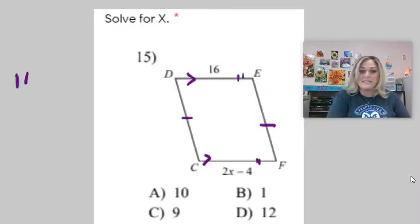So that means 16 should equal the other side across from it, 2x minus 4. So if you know they're congruent, which they are, these tick marks help you. There they are, a little bit bigger.